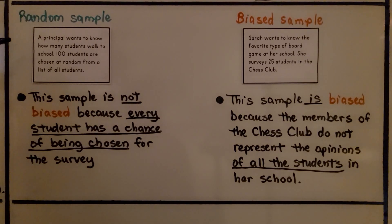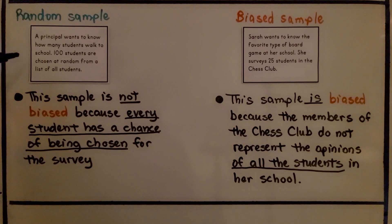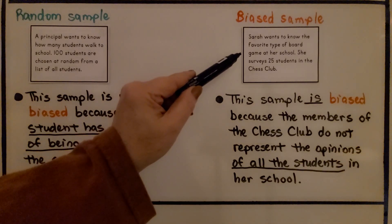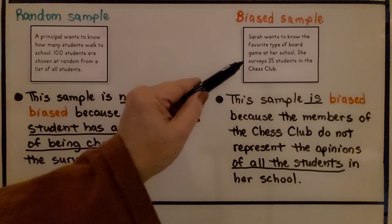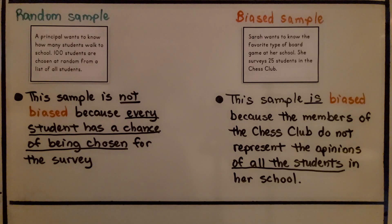The principal who wanted to know how many students walked to school chose 100 students randomly from a list of all students — that was a random sample. This sample is not biased because every student has a chance of being chosen. Sarah wanted to know the favorite board game at her entire school and only surveyed 25 students in the chess club. This is a biased sample because the members of the chess club do not represent the opinions of all students in her school — they might mostly say they prefer chess. She needs to ask random students.